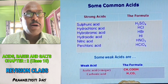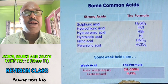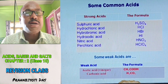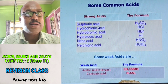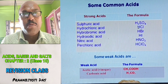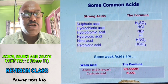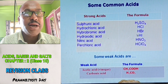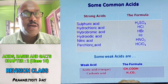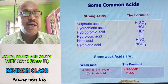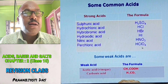Some common strong acids with their formulas: Sulfuric acid (H2SO4), Hydrochloric acid (HCl), Hydrobromic acid (HBr), Hydroiodic acid (HI), Nitric acid (HNO3), and Perchloric acid (HClO4).